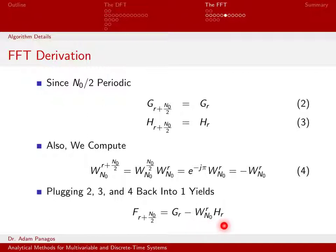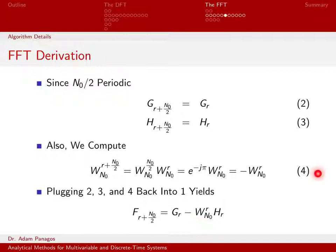...we can write f_{r + n_0/2} equals g(r) minus w_{n_0}^r times h(r). What we did is take Equation 1 and add n_0/2 to every r. We should have had g_{r + n_0/2}, but we used Equation 2 to replace it with g_r. Similarly, we should have had w_{n_0}^{r + n_0/2}, but using Equation 4, that equals negative w_{n_0}^r. And h_{r + n_0/2} becomes h_r using Equation 3.